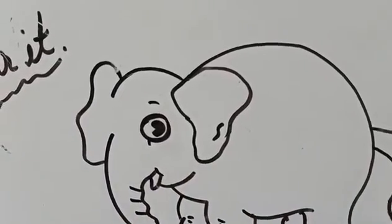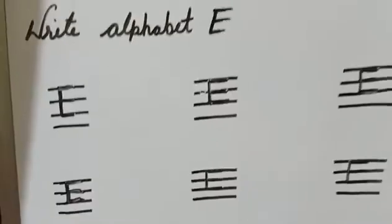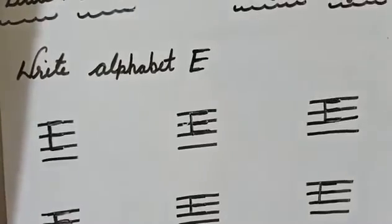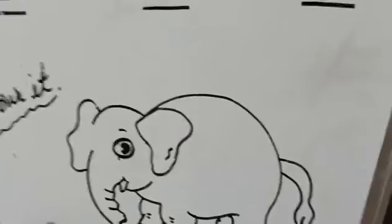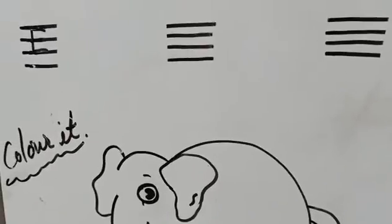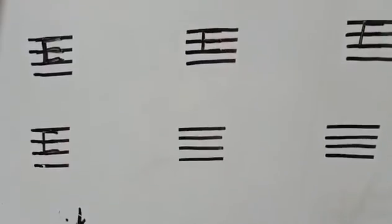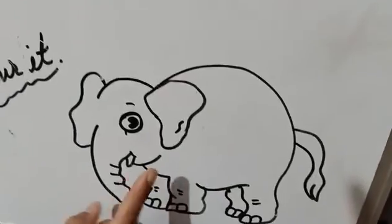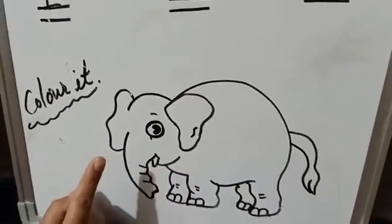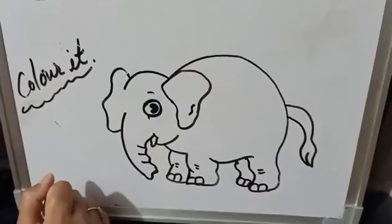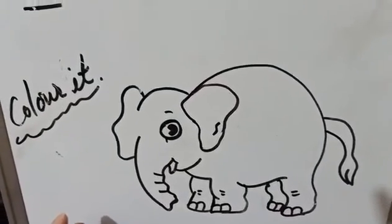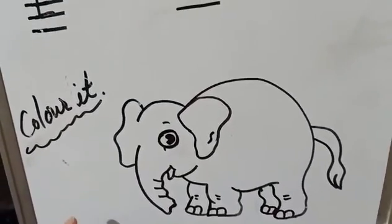Aapki book mein bhi dha rha khai na? Aap logo ne book kharid li hai. E for elephant hai. E for eagle. E for earth. E for eye. Do more practice and write in three lines like this. Color it — only one paste, do one paste. I am waiting for your homework. Take care. Bye-bye.